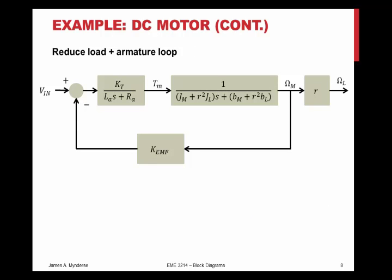So if I do that, and I've moved the pickoff point back just to get it back to what I wanted it originally, then I've got a new block 1 over quantity JM plus R squared JL times s plus the quantity BM plus R squared BL. And that takes care of the entire loop. Well, that's nice. Once I've got it in this form, then it's just another loop on the bottom and that R hanging off on the side. Now I can do exactly the same thing.